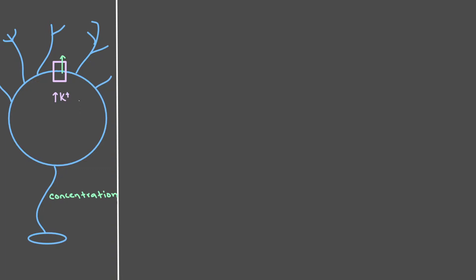But as more and more potassium leaves, that would leave behind negative charge. Since potassium is a positively charged ion, it is very attracted to negative charge — positive charge is attracted to negative charge. So based on electrical attraction, or what we're going to call the electrical gradient, potassium now actually wants to stay in the cell. It's like a tug of war between the concentration gradient and the electrical gradient.